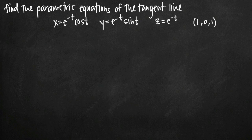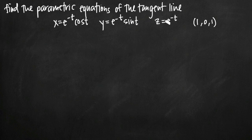Today we're going to be talking about how to find the parametric equations of the tangent line. In this particular problem, we've been given three parametric equations that define our function: x equals e to the negative t times cosine of t, y equals e to the negative t times sine of t, and z equals e to the negative t. We've been asked to find the parametric equations of the tangent line to this curve at the point (1, 0, 1). The first thing we need to do is find the parameter value for t that corresponds to that coordinate point, by setting each equation equal to the corresponding value.